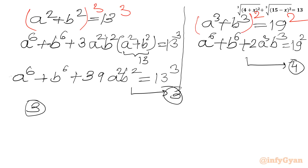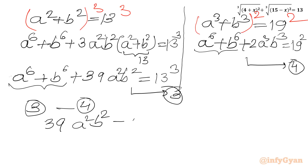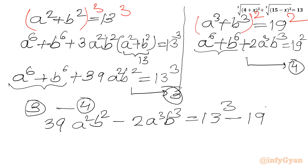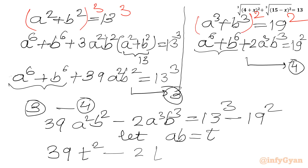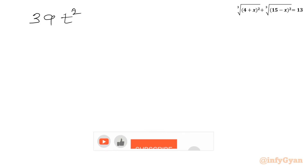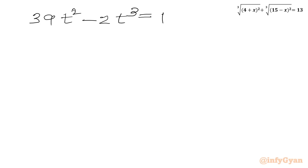Performing operation Equation 3 minus Equation 4: a⁶ + b⁶ cancels, giving 39a²b² − 2a³b³ = 13³ − 19². Now let ab = t. The equation becomes 39t² − 2t³ = 2197 − 361 = 1836.